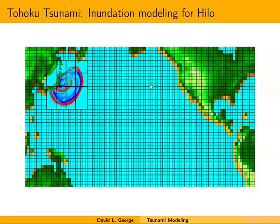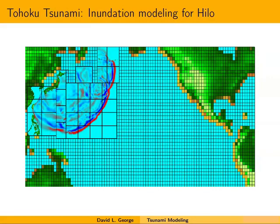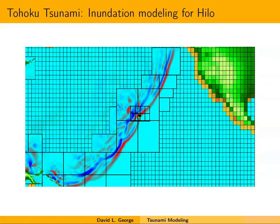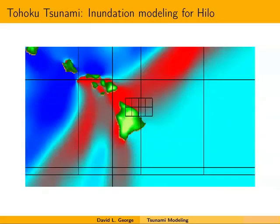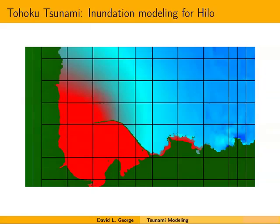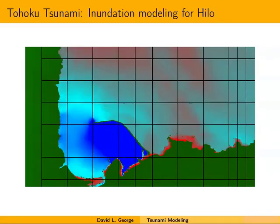The obvious application is tsunami modeling. This is the 2011 Tohoku tsunami. For this particular problem we were looking at inundation in Hilo, Hawaii, so we used extremely high-resolution grids for that harbor with AMR to zoom in on it. One difficulty in tsunami inundation modeling is getting high enough resolution bathymetry. That's actually why we were looking at Hilo — that's one place where we can get high-resolution bathymetry. For Fukushima, it's very hard to get high enough resolution bathymetry for accurate modeling.